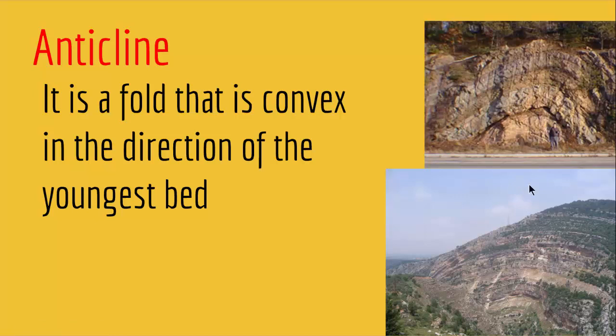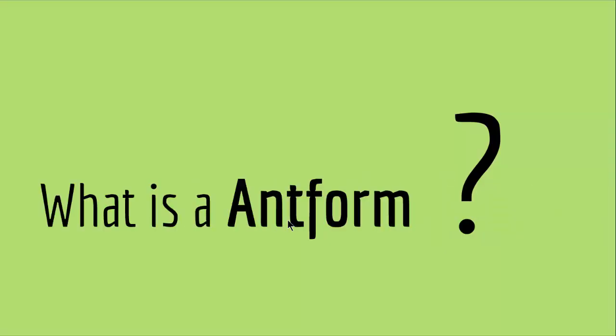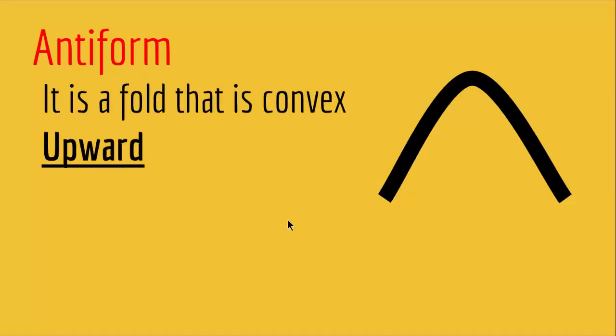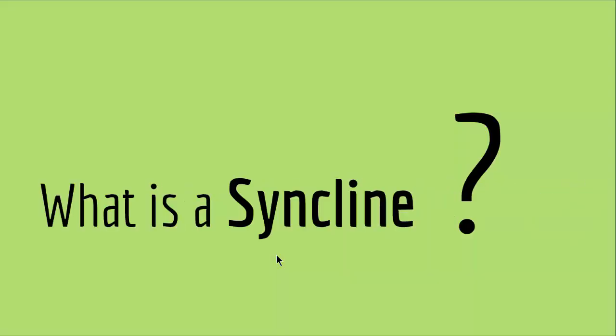But what happens if you don't know whether the layer on top is the youngest or the oldest bed? In that case there is another term called an anti-form. An anti-form is a fold that is convex upward, but used when you don't know if the layer on top is the youngest or oldest layer. So anti-form is a fold that is convex upward, and anticline is a fold that is convex toward the youngest bed.